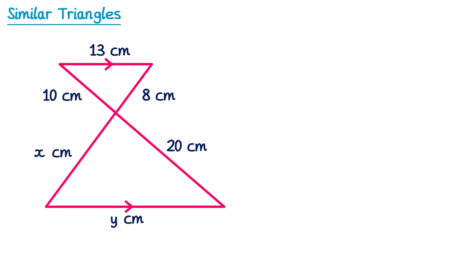Now let's look at the first type of question: two triangles that are connected with a parallel line at the top and at the bottom. The angle in the middle is the same for both triangles because these are vertically opposite angles. Drawing in the green angle, we find it matches the green angle below due to alternate angles — you can see the Z shape. The same idea works for the blue angle on the other side, also due to alternate angles.